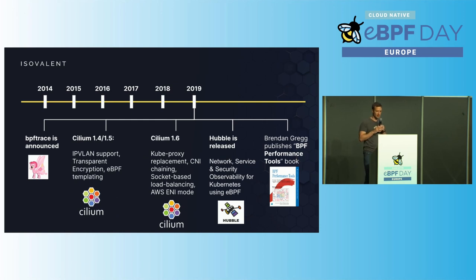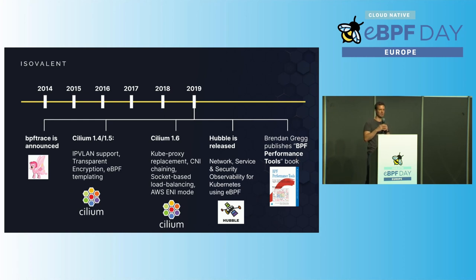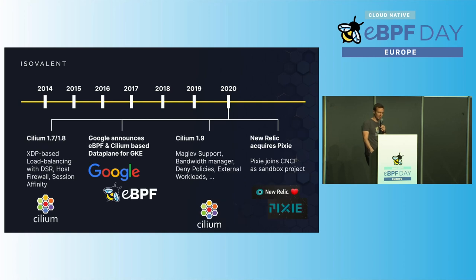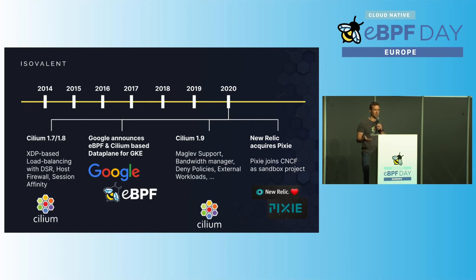BPF Trace was announced in 2019 as an evolution of BCC. Cilium released several versions with IPvLAN support, encryption, kube-proxy replacement, and Hubble — the observability layer of Cilium providing network visibility and metrics. Brendan Gregg also published BPF Performance Tools, probably the most detailed book on eBPF available today. In 2020, Google announced they would change all GKE networking to be eBPF-based on top of Cilium — DataPlane V2 in GKE. A major milestone where a major cloud provider bet their products on eBPF. Neural acquired Pixie in the observability space, and Pixie is today a sandbox project in the CNCF.